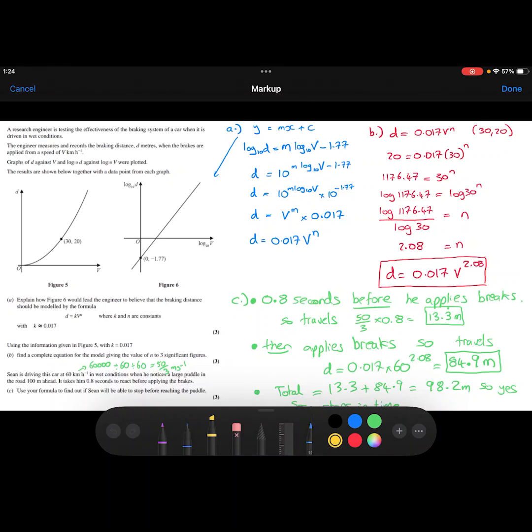I'll just talk you through this question. We're given two graphs here that are all about D, which is the braking distance, and V, which is the speed of a car. Part A of this question asks us to explain why Figure 6 would lead to the engineer believing that the braking distance is going to be modeled by this equation where K is roughly 0.017.